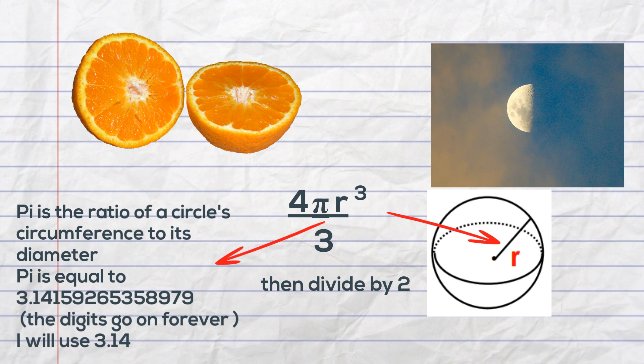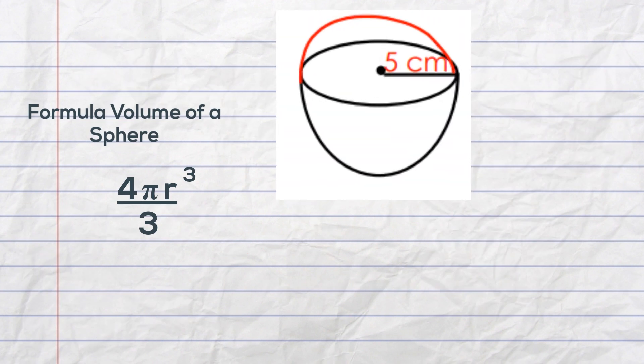Let's work an example. You have a hemisphere with a radius of five centimeters. So first we will find the volume of a sphere by multiplying four times pi which is 3.14 times the radius cubed which is five cubed and divide that by three.